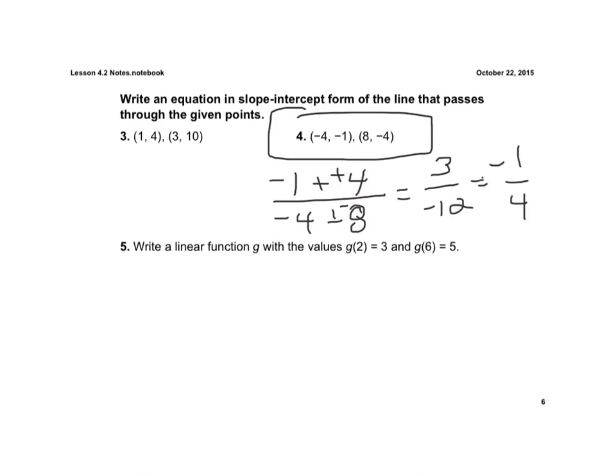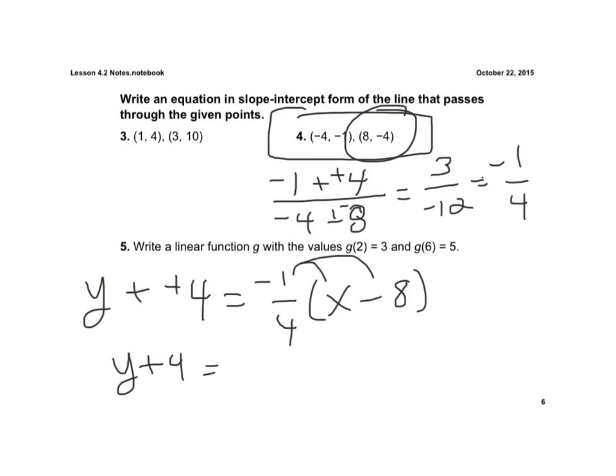And now, that's my slope. So now I have y minus, and I'm going to use this ordered pair, negative 4 equals negative 1 fourth times x minus 8. Notice I'm always using point slope form. Two negatives make a positive, so it's y plus 4 is equal to, now I'm going to distribute this through, negative 1 fourth times x, negative times negative is positive, and a fourth of 8 is 2.